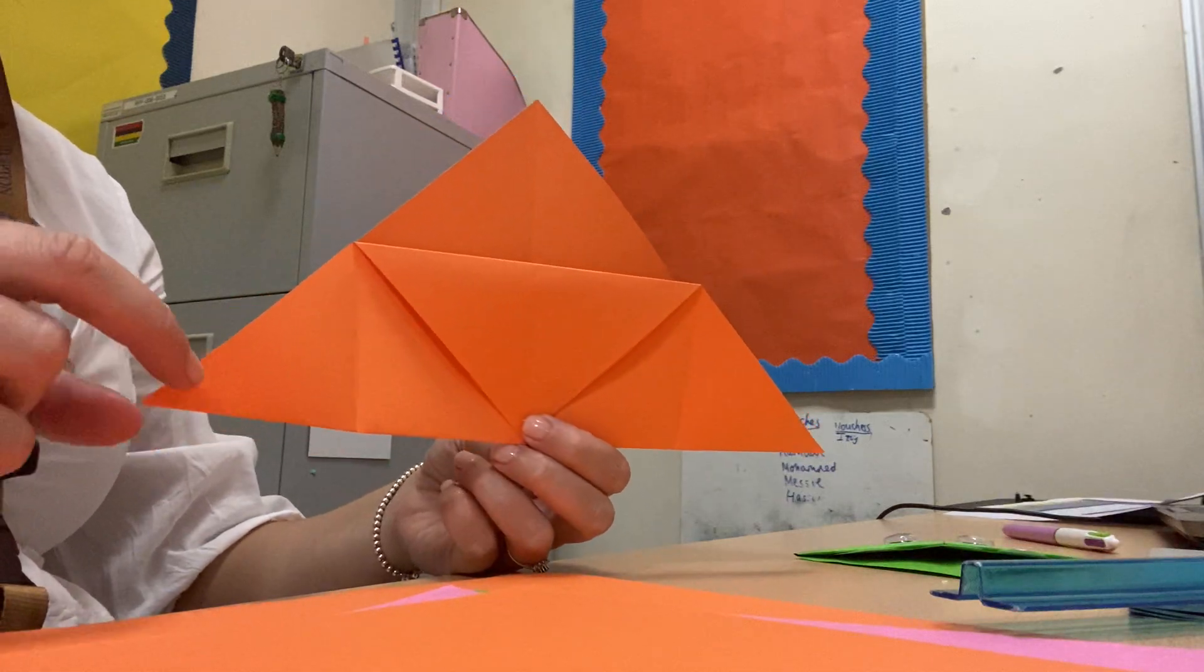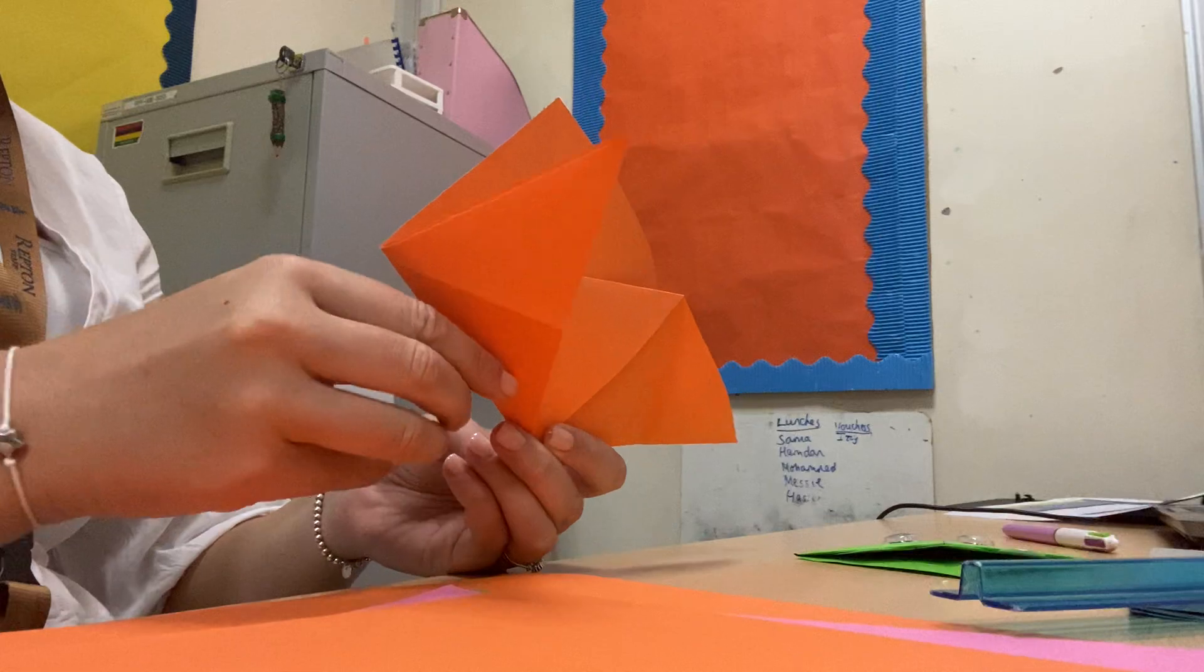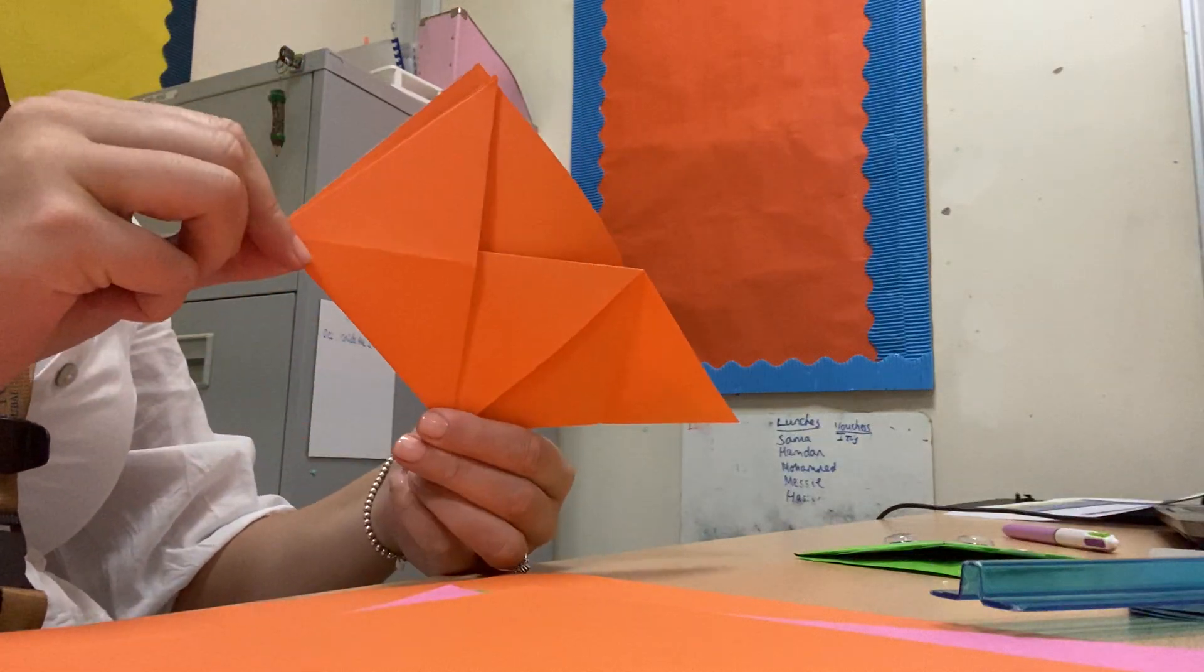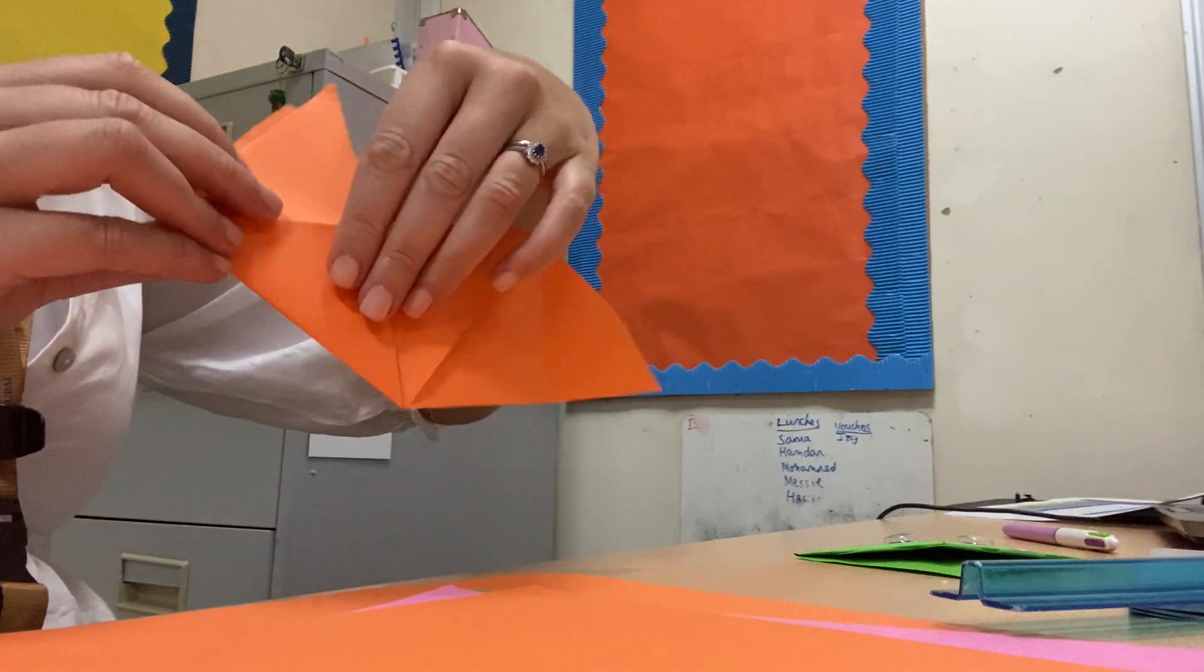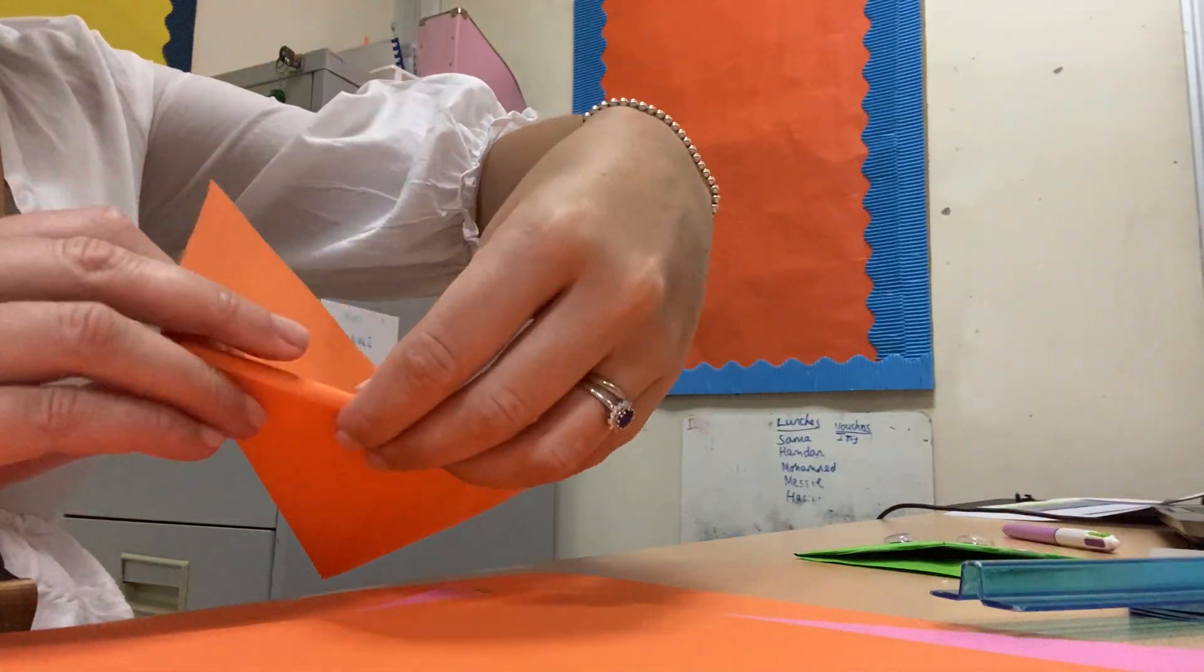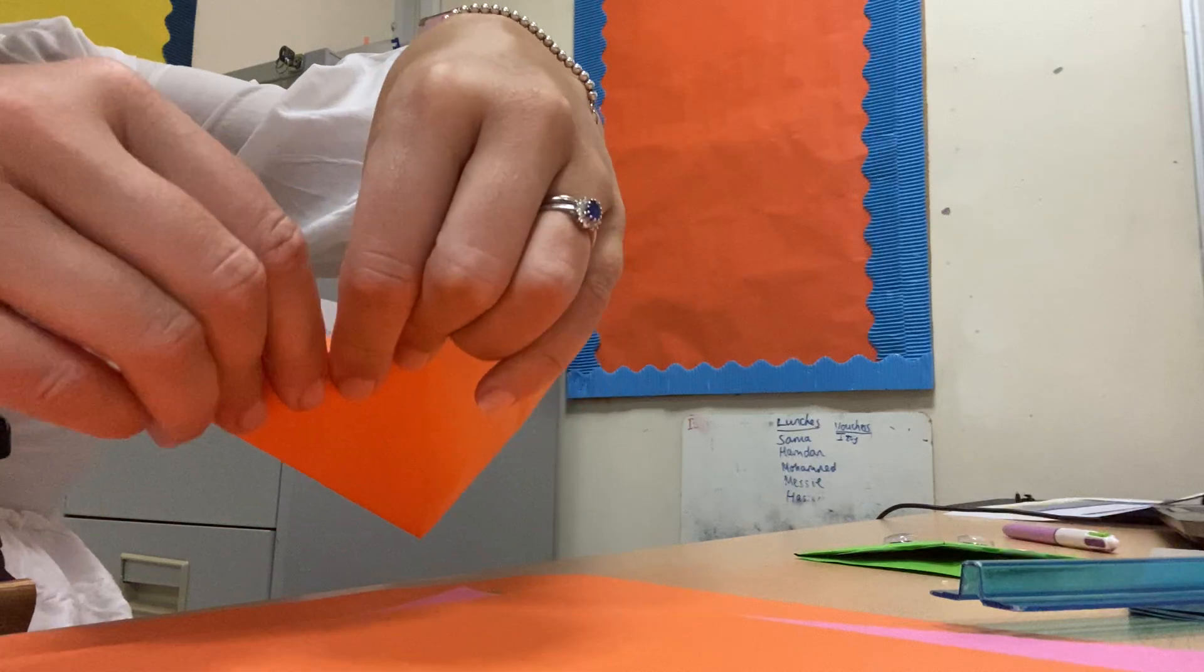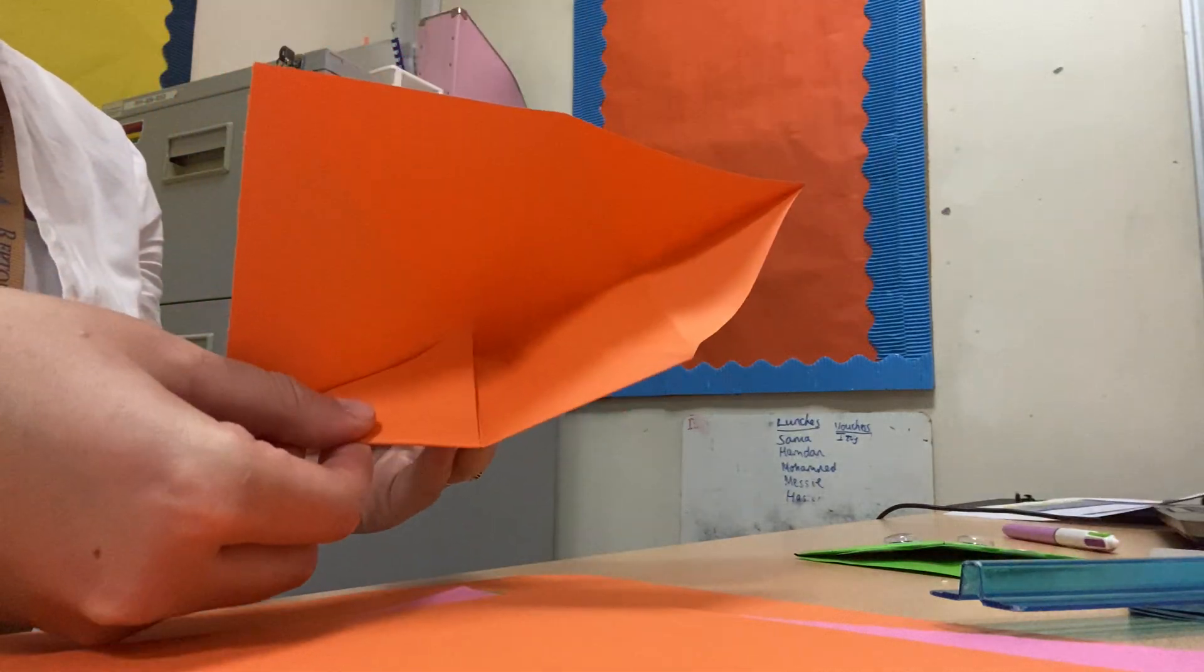We're nearly there. So now we take this corner, fold it back up to the top again. Remember, we've already got that fold line. But this time, the top bit is going to fold in to the little pocket like this.